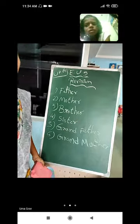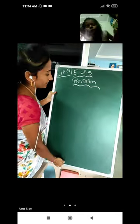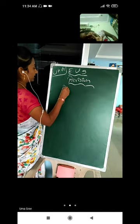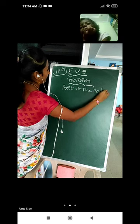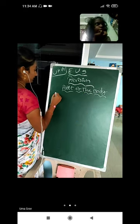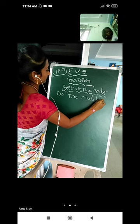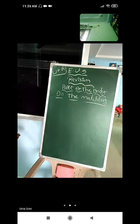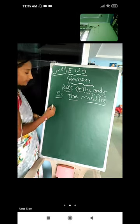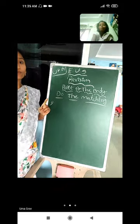Okay children, I will erase it. Do the matching. Second thing is do the matching for family, body parts. Parts of the body, do the matching. One side I will give some pictures, other side I will give the name.